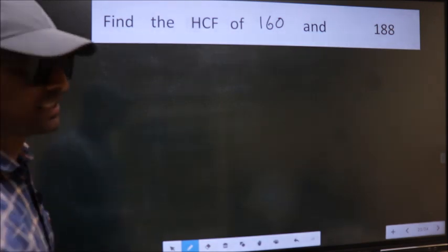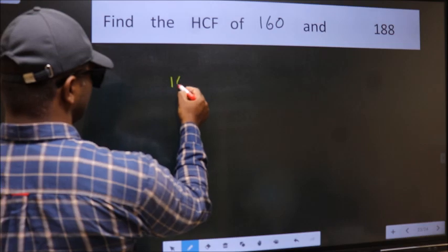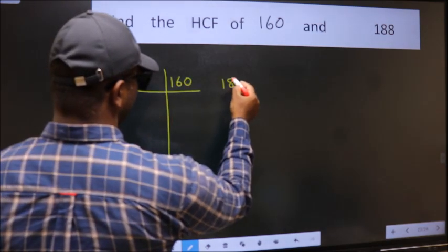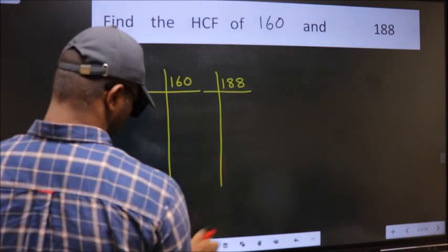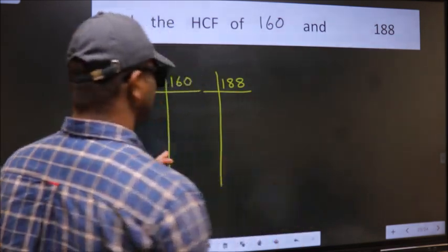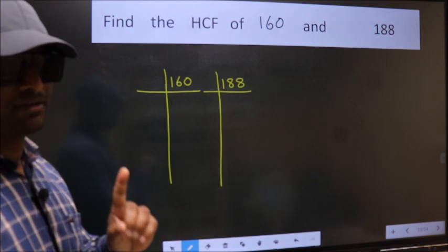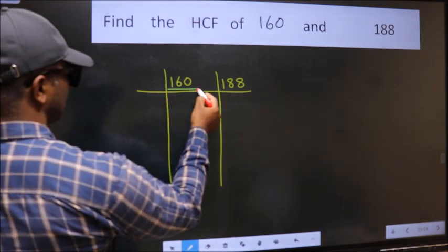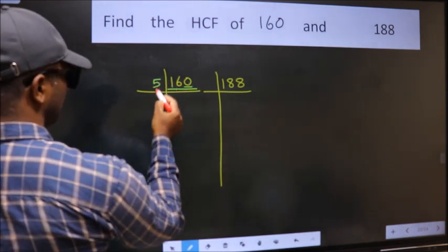What I mean is, take 160 and 188. This is your step 1. Next, in this number, last digit is 0, so take 5.